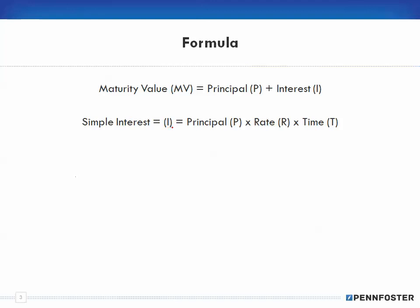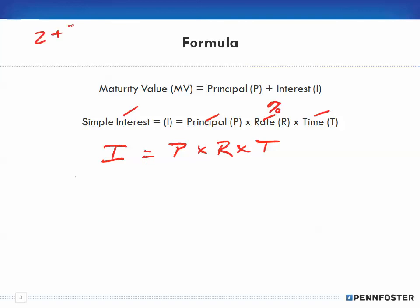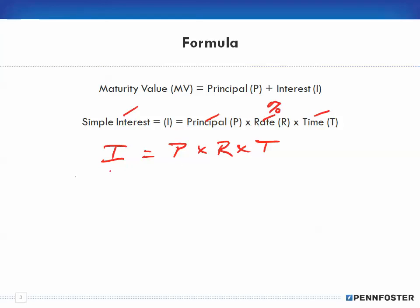The second formula is: simple interest equals principal times rate times time, written as I = P × R × T. This is important because principal is your deposit, rate is the interest rate percentage, and time is how long the money is held. Now here's the thing — this formula can be manipulated. If you know three of the four variables, you can always figure out the other one.